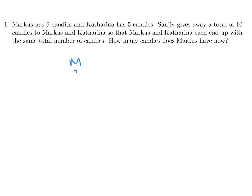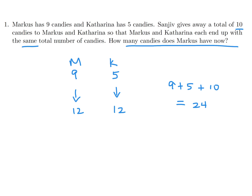Marcus initially started with 9, Katerina started with 5. The total would be 9 plus 5 plus the 10 that Sanjeev gives them, so that is 24. This is divided equally because they have the same amount, so that means eventually it'll be 12 and 12 for both Marcus and Katerina. They just want you to find out how many they have, so the answer is 12.